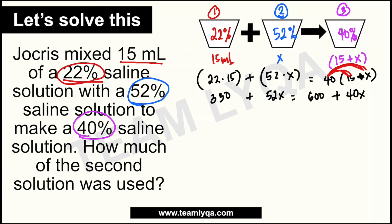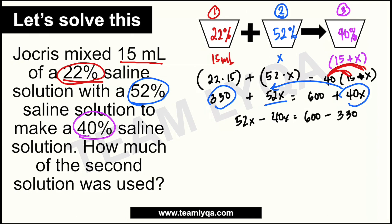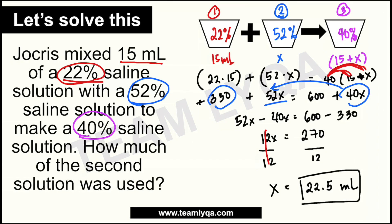So now we have: 330 plus 52x equals 600 plus 40x. I-solve na natin ngayon. Ang gagawin ko: yung 40x ang ililipat ko doon kasi mas malaki itong 52x, tapos yung 330 ang ililipat ko sa kabila. So magiging: 52x minus 40x is equal to 600 minus 330. This right here would be 12x equals 270. Di-divide natin both sides by 12, so x is equal to 270 divided by 12, which gives us 22.5. So, 22.5 ml yung dami ng 52% solution — yan ang magiging sagot natin.